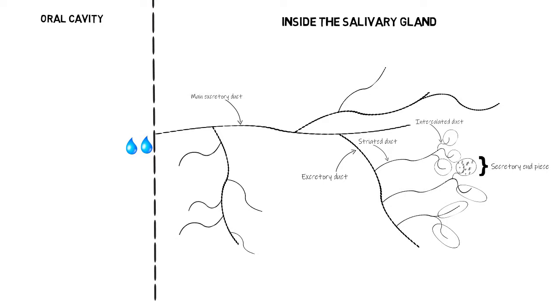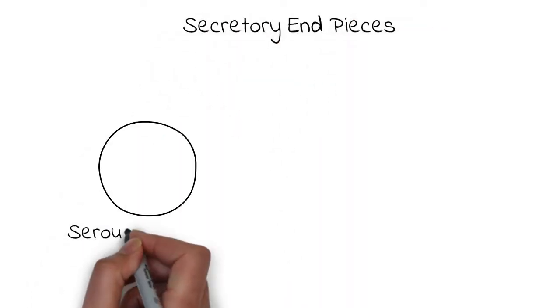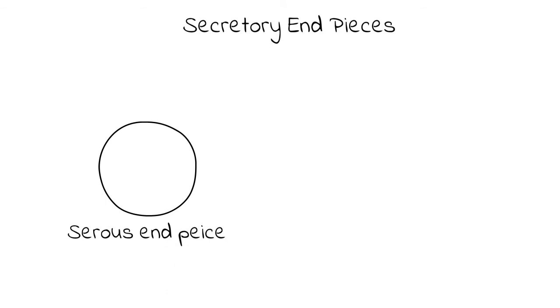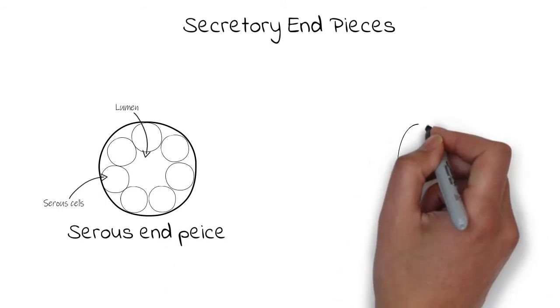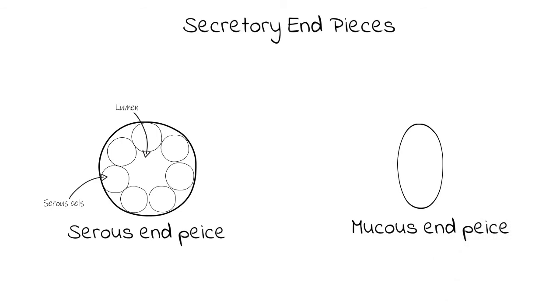There are basically two types of end pieces: one is the serous end piece, which consists of serous cells, and the other is the mucous end piece, which consists of mucous cells.